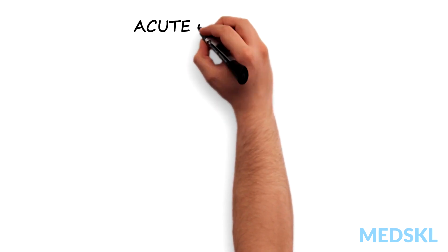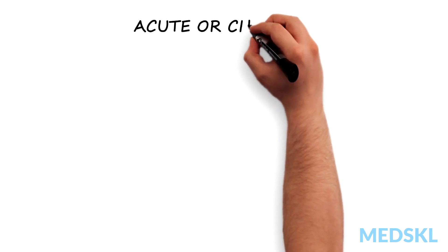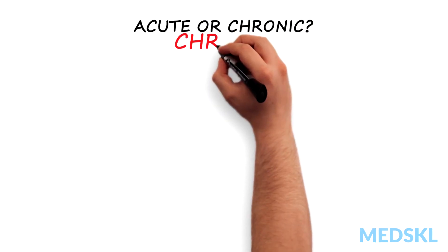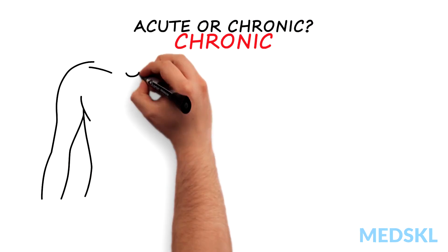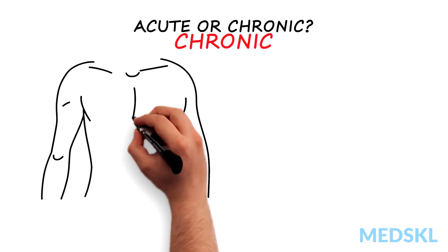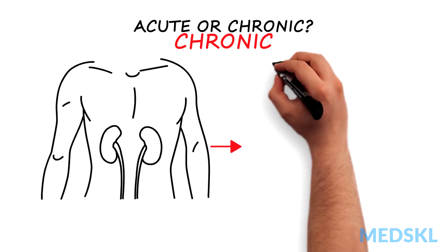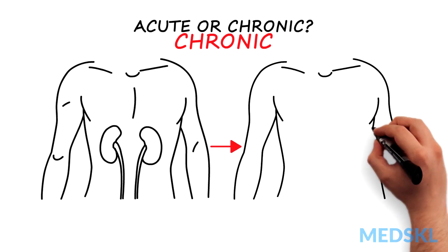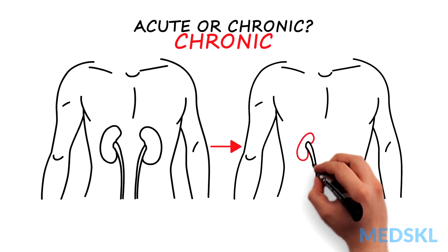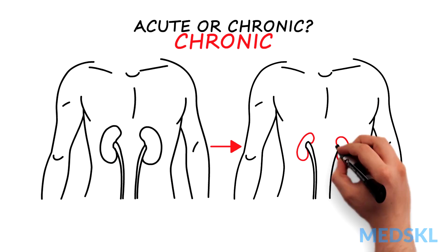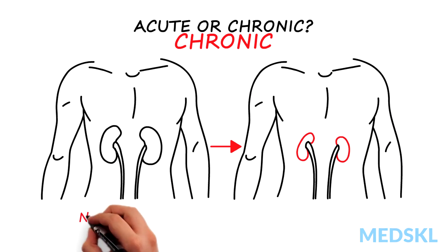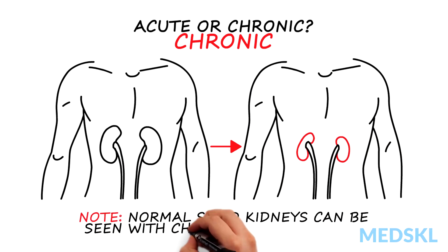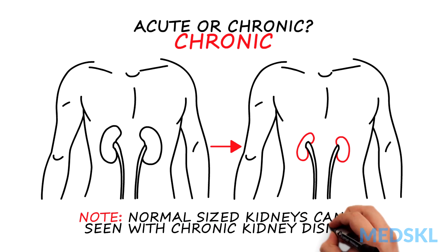First, decide if the low GFR is acute or chronic. If no previous data is available to suggest it is chronic, small kidneys seen on ultrasound imaging is strongly suggestive of chronic kidney disease. Note that normal-sized kidneys can be seen with chronic kidney disease.